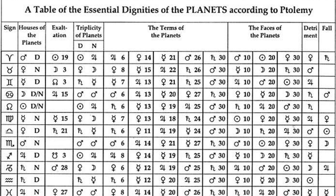Aries is ruled by Mars. Taurus is ruled by Venus. Gemini is ruled by Mercury. Cancer is ruled by the Moon. Leo is ruled by the Sun. Virgo is ruled by Mercury. Libra is ruled by Venus. Scorpio is ruled by Mars traditionally, and Pluto modern. Sagittarius is ruled by Jupiter.